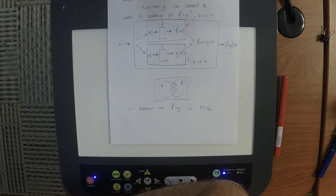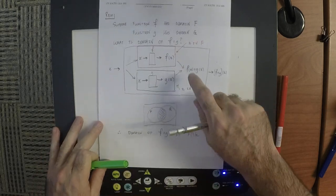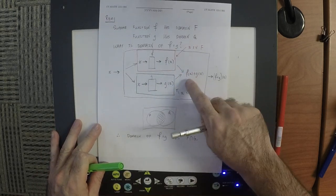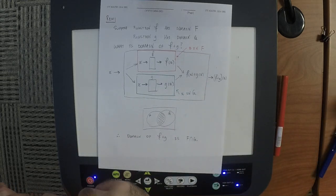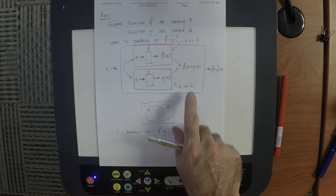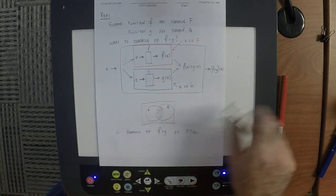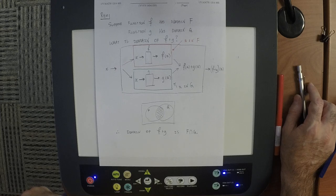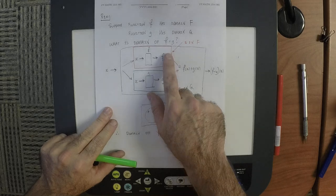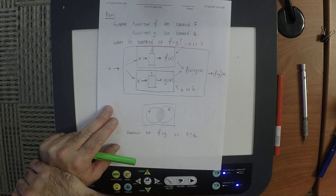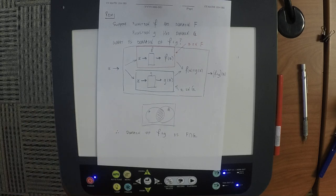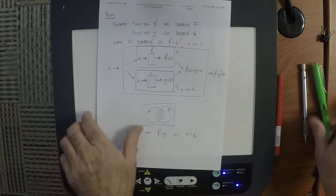There's nothing special about plus — replacing it with minus or product gives the same result. But for division, there's one additional restriction: not only must x be in f's domain and g's domain, but g(x) cannot be zero for that input.